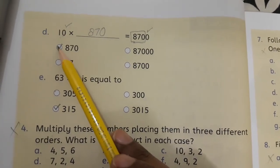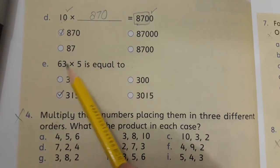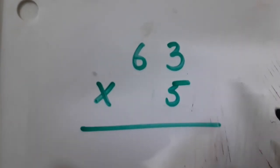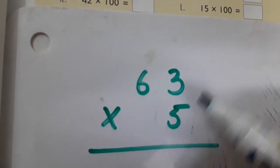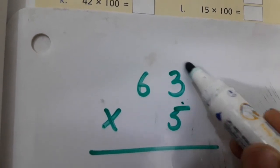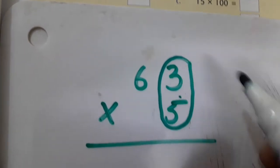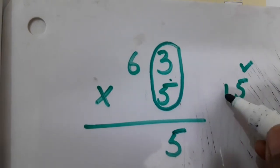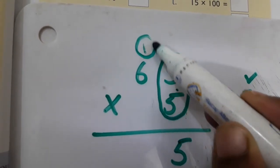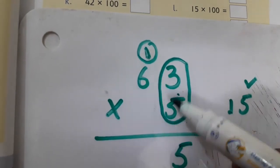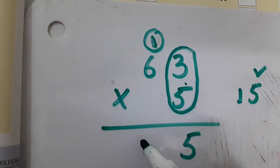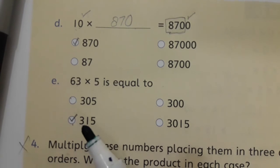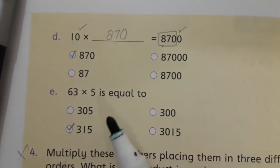So we take that answer. The next one: 63 multiplied by 5 is equals to. We will multiply 63 by 5 and get the answer. First, 5 threes are 15 — we write the right digit 5 and carry 1. Then 5 sixes are 30, plus 1 is 31. So this is our answer: 315. You can see here this is our answer, 315.